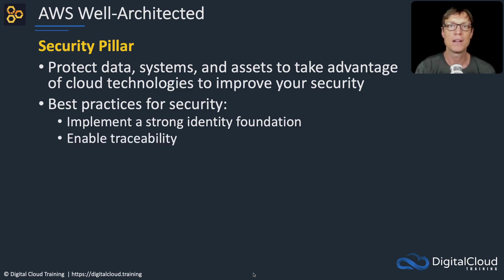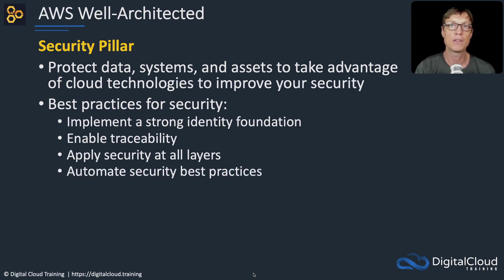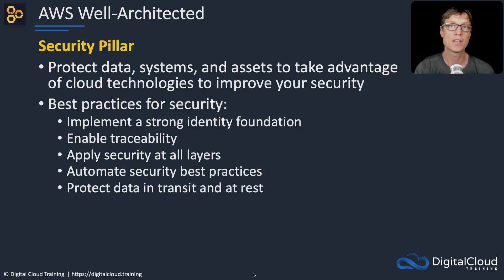Enable traceability so you can trace what's happening — where did things go wrong, what's happening here and there? Apply security at all layers — don't just apply security at the perimeter; make sure every layer of your application and infrastructure has security applied. Automate security best practices — automate as much as you can; the more you automate, the less human error you're likely to have. Protect data in transit and at rest — think about encryption here.